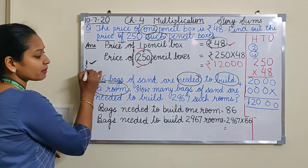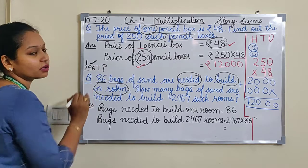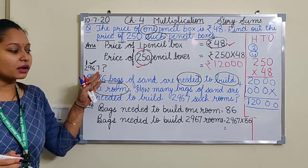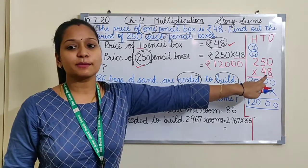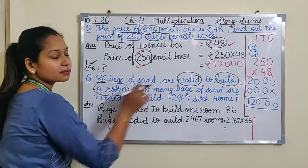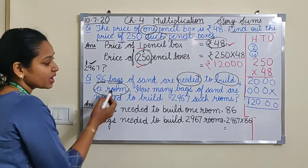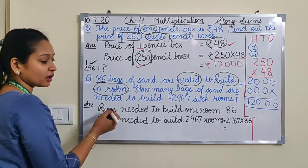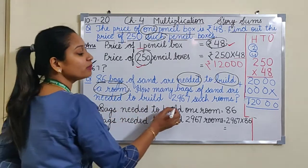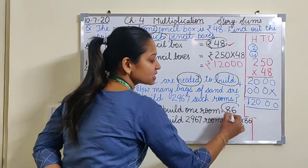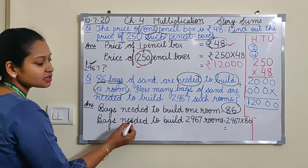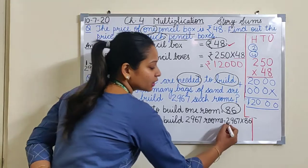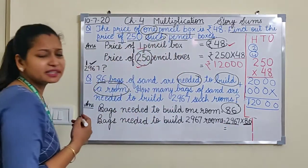Now let's read next line. How many bags of sand are needed to build 2,967 such rooms? Ek bag ka diya hua hai aur hamein 2,967 ka find out karna hai. Jab one ka diya hota aur more ka nikalna hota hai, we always do multiply. Let's make statements. Bags needed to build one room: 86. Bags needed to build 2,967 rooms: 2,967 ko 86 se multiply.